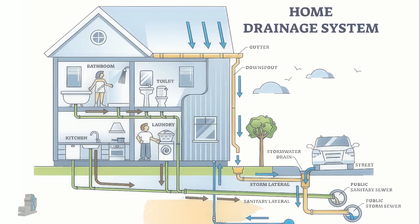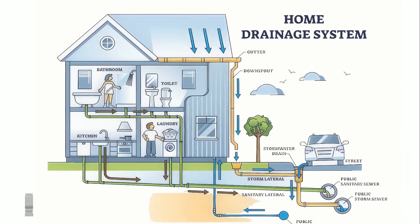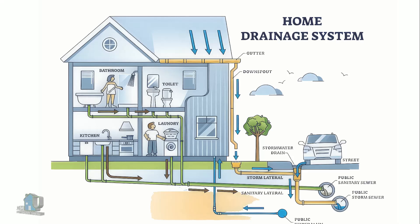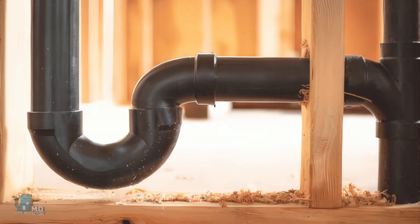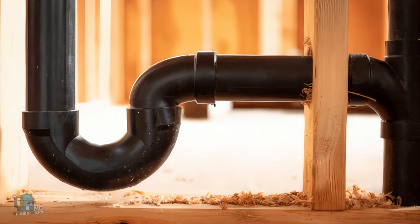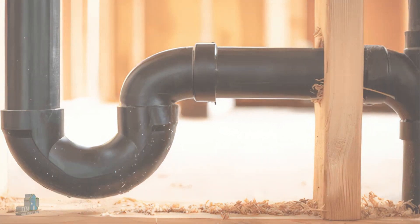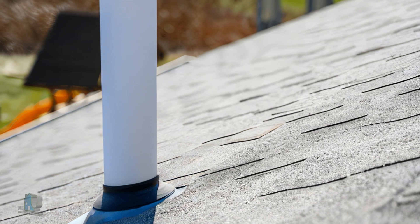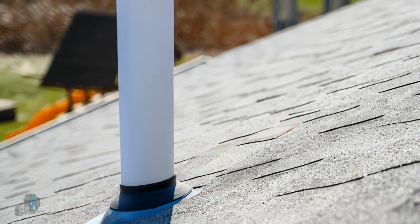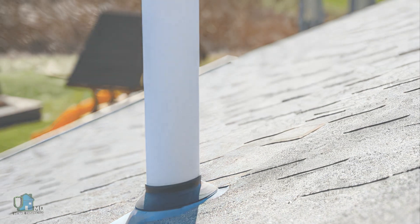Every house has a waste pipe system along with a venting system. For obvious reasons, we want soil and waste to exit the house easily, but that task is a problem if it's trying to push air out of the way in the pipe. This is where vents come into play — their function is to equalize the air pressure in the piping system, making the flow of waste easy.